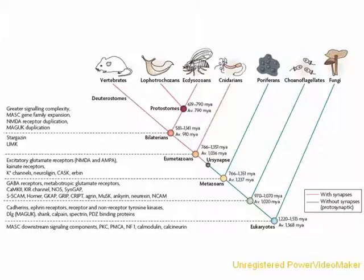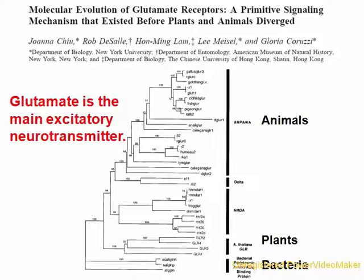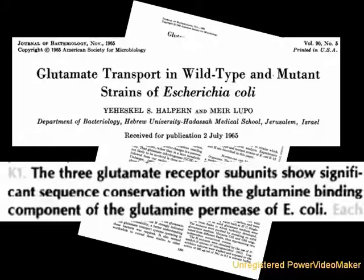The receptor came first. Analysis of DNA sequences reveals that glutamate receptors existed before the divergence of plants and animals, and therefore before the emergence of multicellular life. And the glutamate binding domain goes as far back as bacteria.